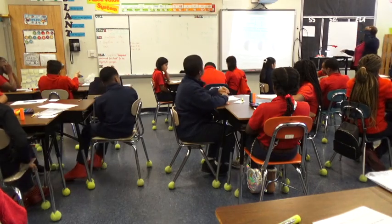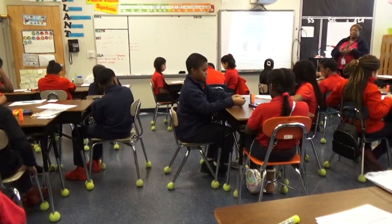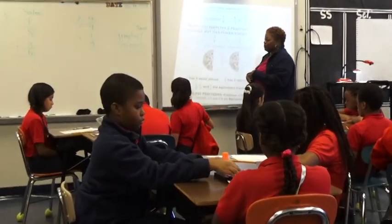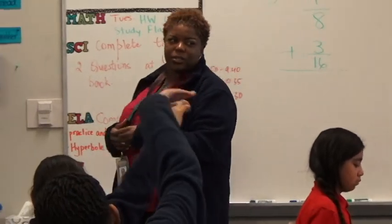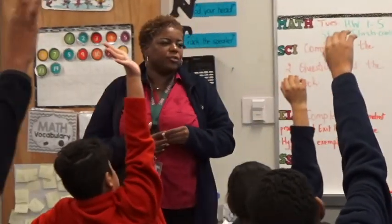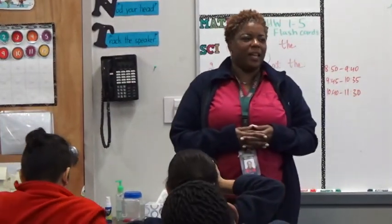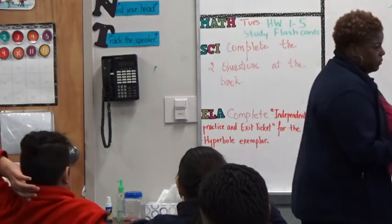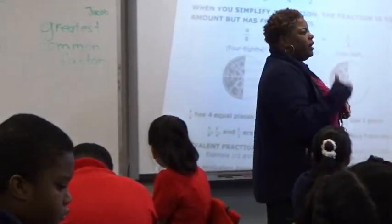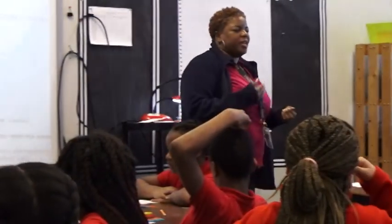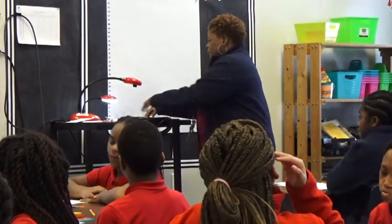So now let's go into the word factors. Can you tell me what factors are? They're right there in your notes. What are factors? Destiny, what are factors? Numbers we multiply together to get products. She said numbers we multiply together to get the product. Do you agree? So if I said five times four equals 20, what two numbers would be the factors? Five and four. Factors give us the product.